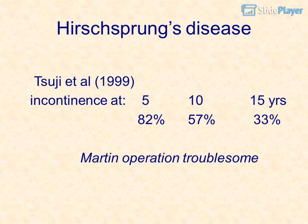Tsuji et al., 1999: incontinence at 5, 10, and 15 years: 82%, 57%, 33%. Martin operation was troublesome.